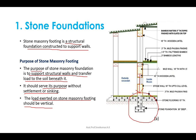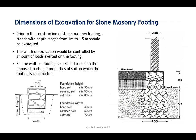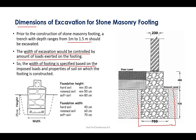Next, we'll discuss the dimensions of excavation for stone masonry footing. Prior to construction, a trench with depth ranging from 1 meter to 1.5 meters should be excavated. The width of excavation is controlled by the amount of loads exerted on the footing, and the footing width is specified based on imposed loads and properties of the soil.